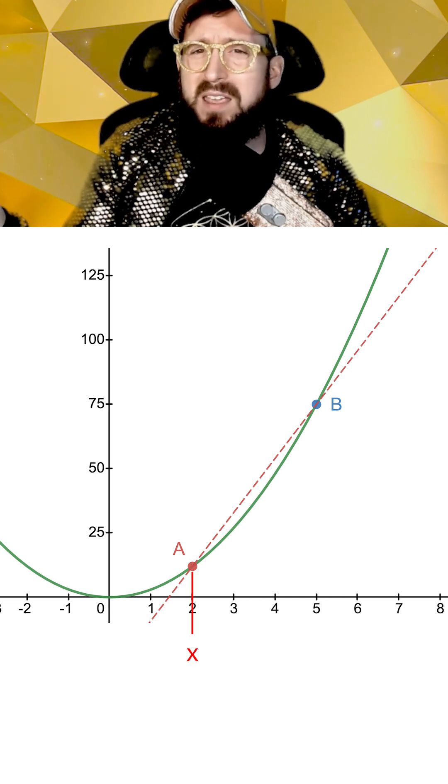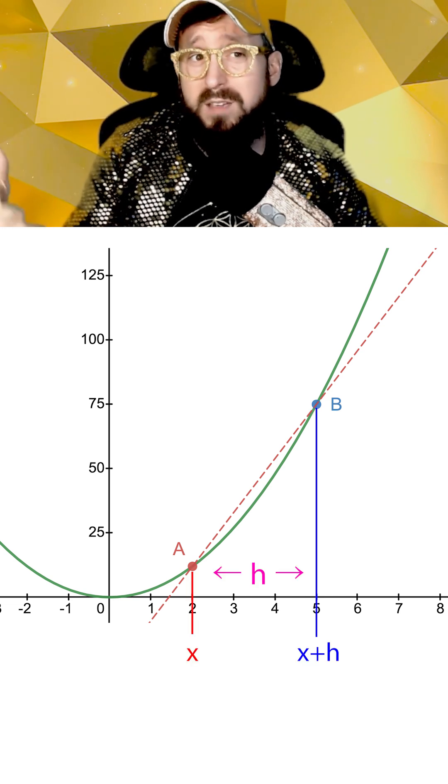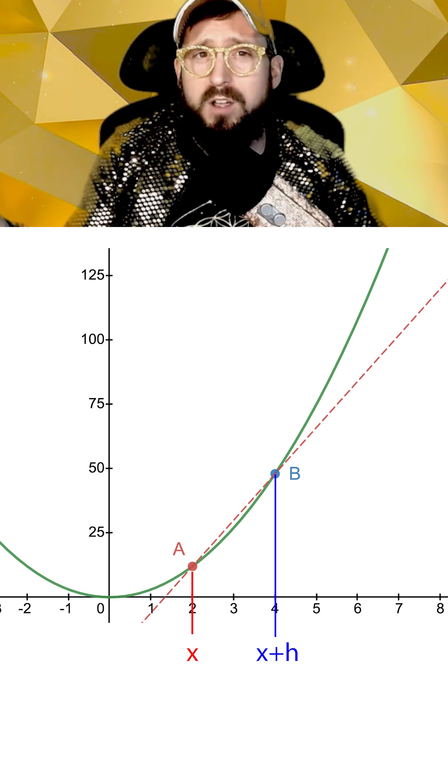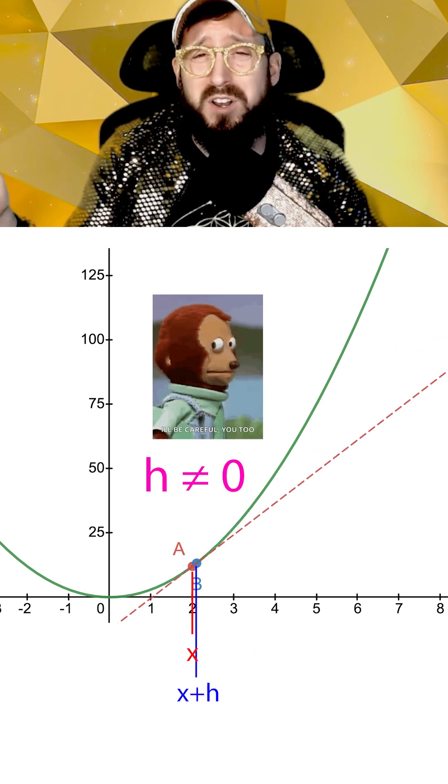Now getting b very close to a would mean making the horizontal distance between the points, h, smaller and smaller until it was basically zero, but not actually zero.